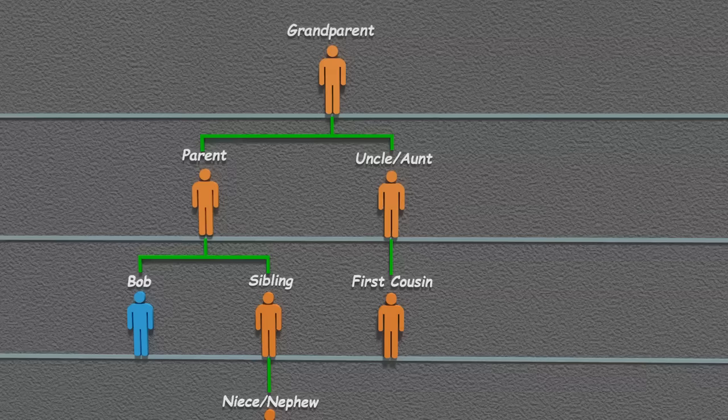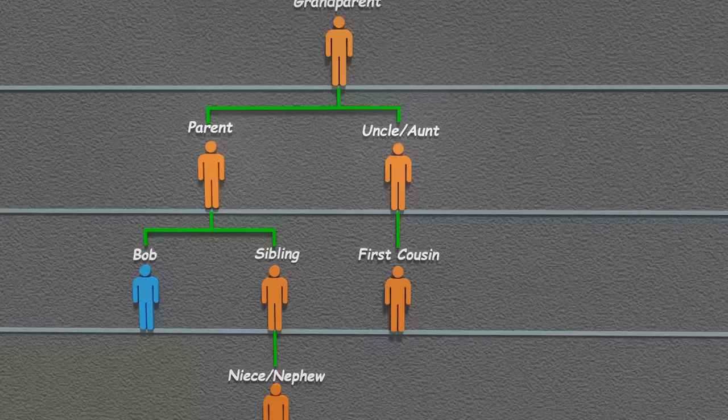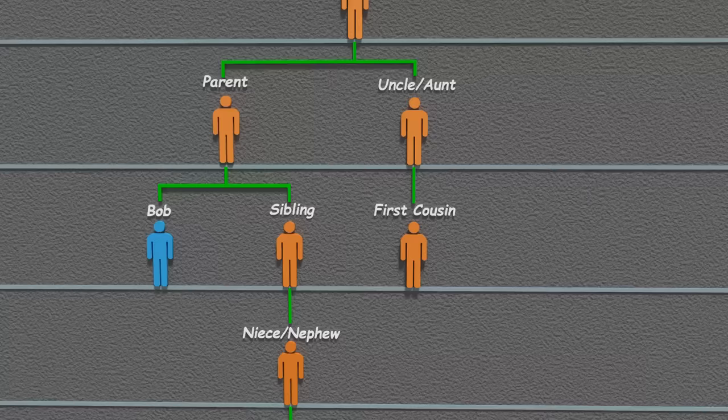Any child here is Bob's first cousin — you and I might just say cousin. Notice that first cousins share the same grandparents. In other words, cousins are children of siblings.